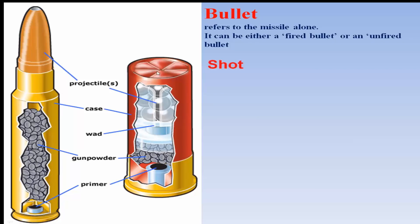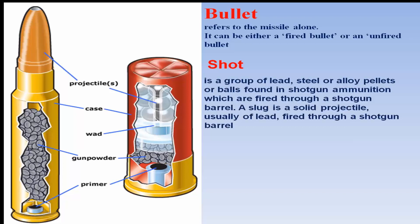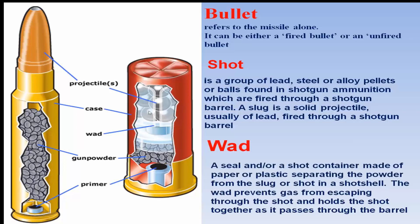In shotgun ammunition, instead of a bullet you have shots. Shot is nothing but small lead, steel, or alloy balls or pellets found in shotgun ammunition, fired through the barrel of a shotgun firearm. In some shotgun ammunition a shotgun slug may also be used — a slug is a solid projectile, usually of lead, fired through a shotgun barrel. The wad (VAD) is a short container made of paper or plastic that prevents gas from escaping through the shot and holds the shot together as it travels through the barrel.